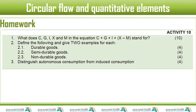As usual, we start with our homework. Number one said: what does C, G, I, X, and M in the equation C plus G plus I plus X minus M stand for? C is consumption spending by households. G is government spending. I is investment spending. X is exports. M is imports.